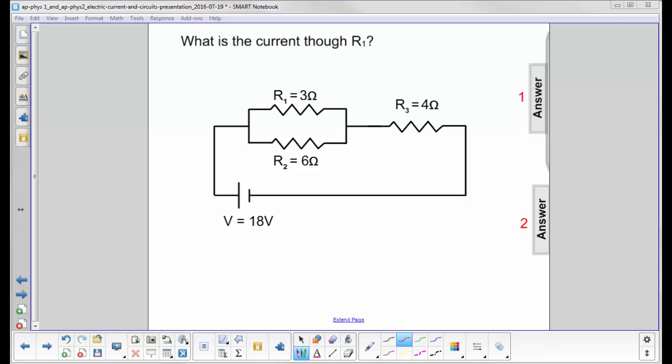What is the current through R1? First, we have to find the total current coming out of the battery.